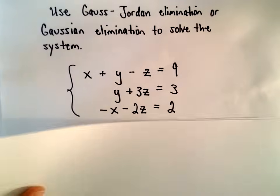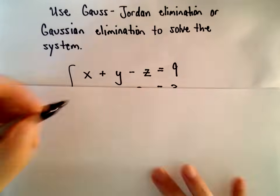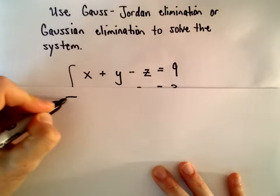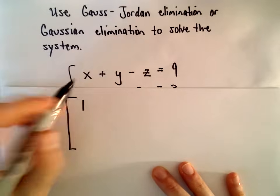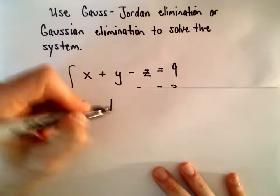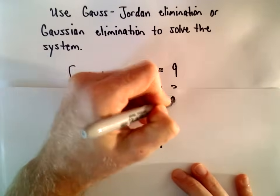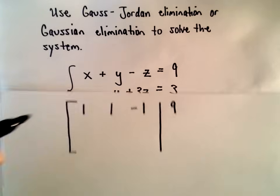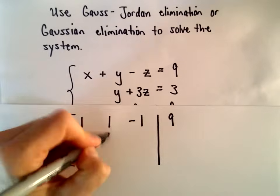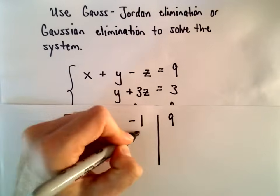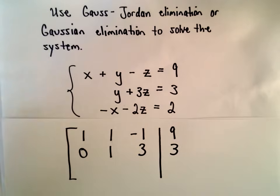The first thing I'm going to do is write down my augmented matrix. From the first row, our coefficients are positive 1, positive 1, negative 1, and our constant is 9. For the second row, we have 0x, 1y, 3z, and our constant is 3.